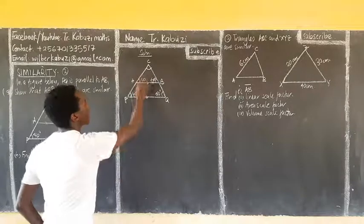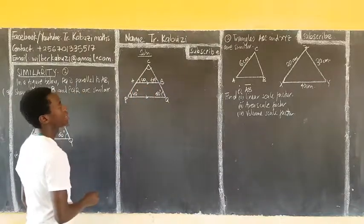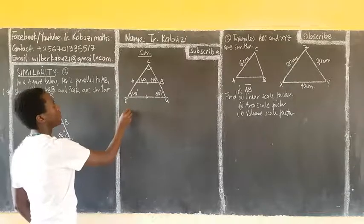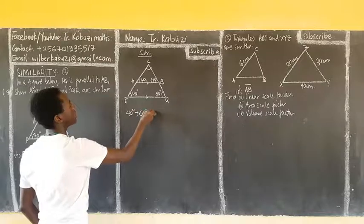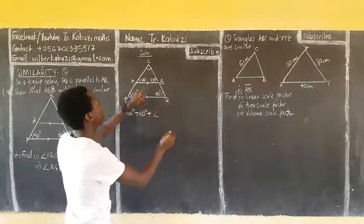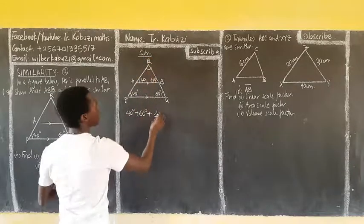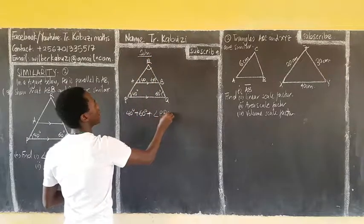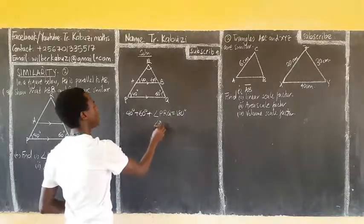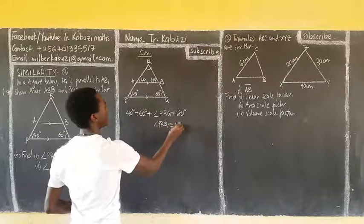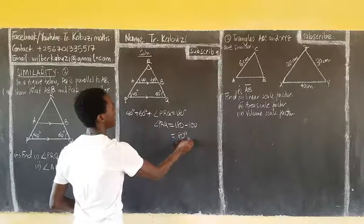Now, from there, you see that if I have this and this, I can easily get this. And this one is going to be, you see that now, my angle, if I have this and this, you see that I can get this. Now, when I get 40 degrees plus 60 degrees plus the angle PRQ, I get 180. And so, my angle PRQ is going to be 180 minus 100, which is equal to 80 degrees.